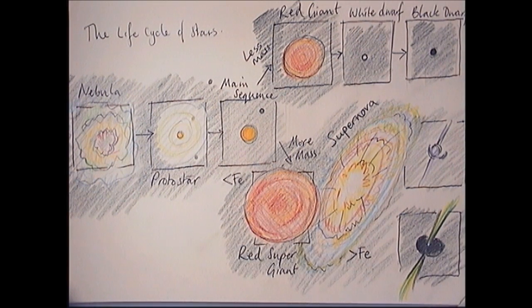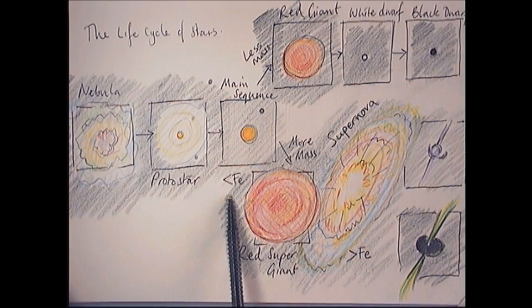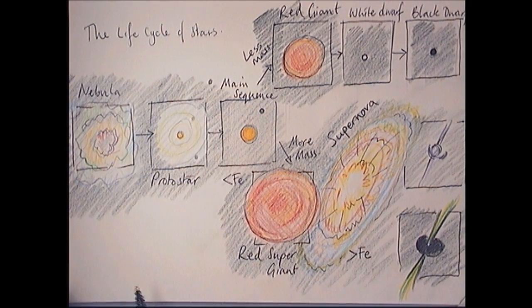It's a really important thing to understand. So everything on Earth was made in a star. If it's less than iron during its main sequence, if it's more than iron, higher in the periodic table than iron, then it was made during a supernova.